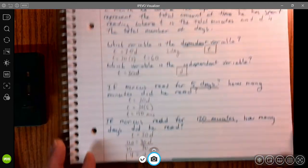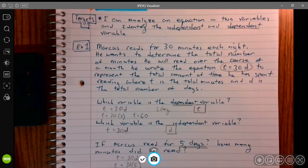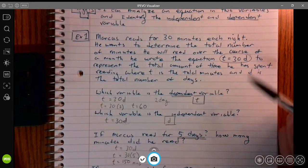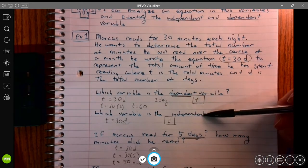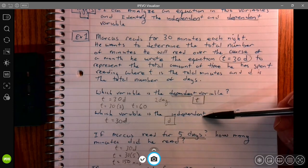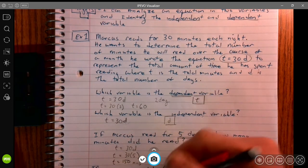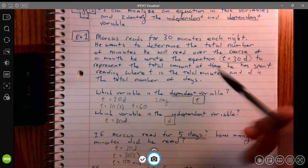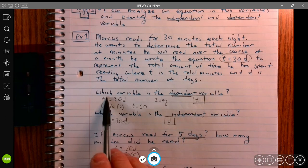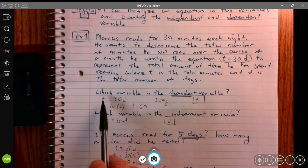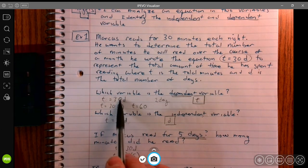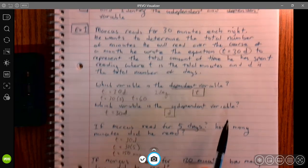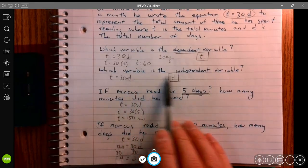This lesson is really all about the dependent and independent variables. That's what I really want you guys to get out of this. The rest of this we pretty much know how to do at this point. Remember the dependent variable, it's usually the one that's isolated on the left side of the equation. It's dependent, it depends on what we plug in for this variable here.